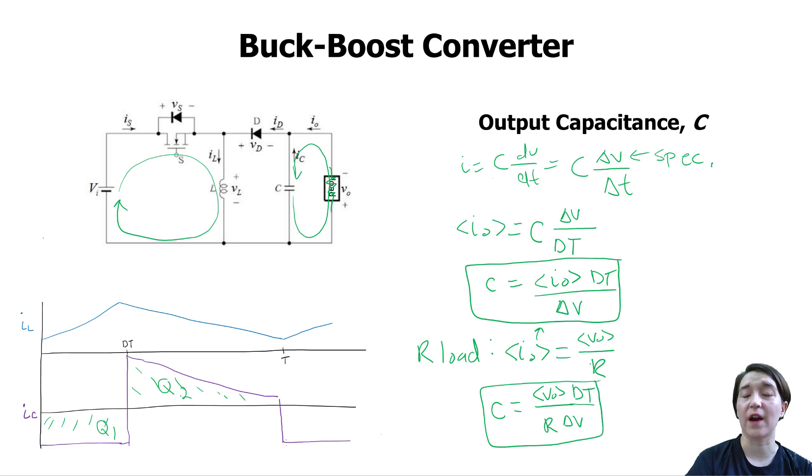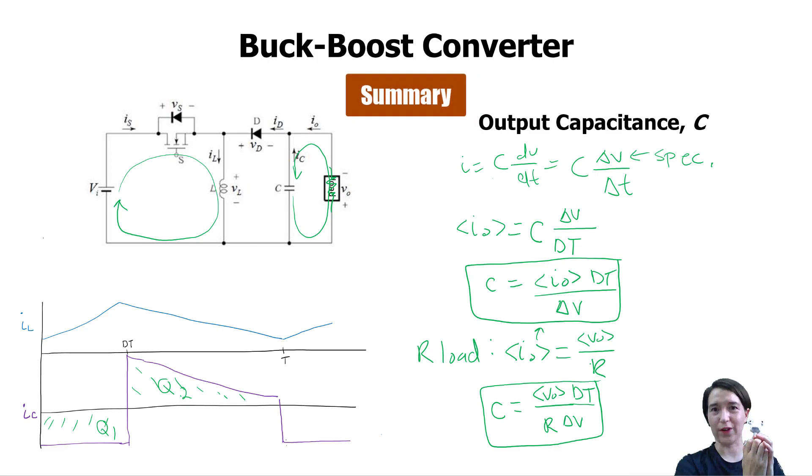So for the buck-boost converter, we have the output capacitance is going to be based on the output current, the duty ratio and the period, and the ripple that we expect.